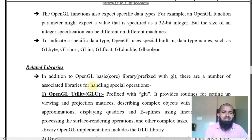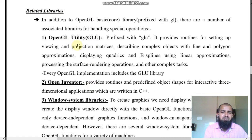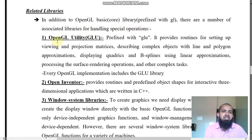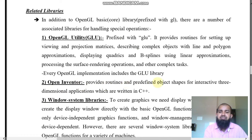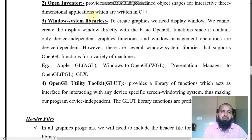Related libraries: in addition to OpenGL basic libraries, there are a number of associated libraries for handling special operations. One is OpenGL Utility (GLU). Another is OpenInventor, which provides routines and predefined objects and shapes for interactive three-dimensional applications written in C++. There are also Windows system libraries such as WGL (Windows-to-OpenGL), PGL, and GLS.